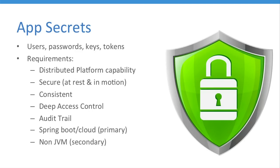App secrets — what are app secrets? These are your database usernames and passwords, your API keys when you want to connect to a third-party API like the Facebook API, and your access tokens as well. What are our requirements for app secrets? As the platform services team, we wanted to distribute a platform capability so all of our different development teams don't have to worry about this. I call it the path of least resistance — if a team finds a better way, more power to them, and we'll consume that as part of the platform.